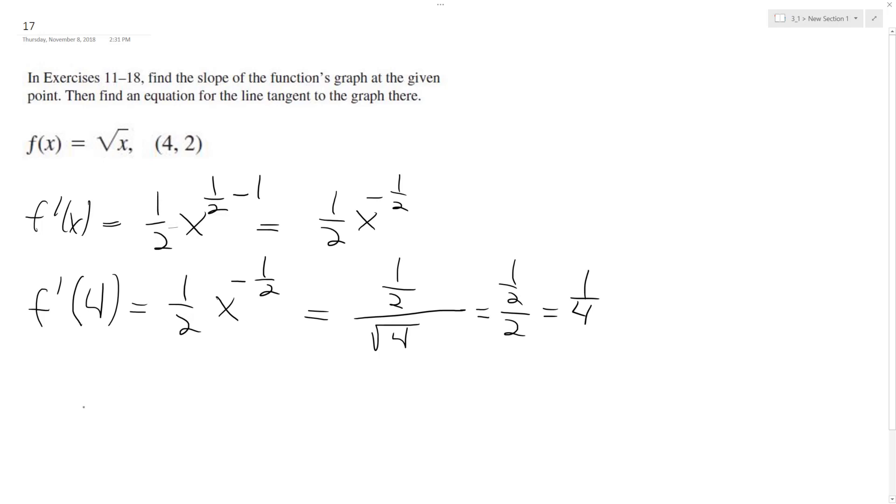So next, we use the point-slope form: y minus 2 is equal to 1/4 times (x minus 4), which gives us y minus 2 equals 1/4 x minus 1.